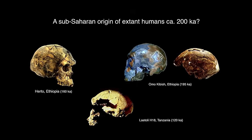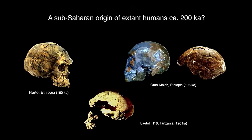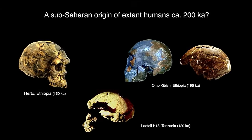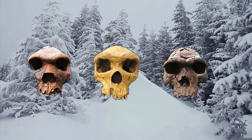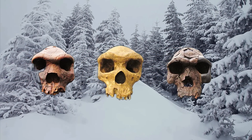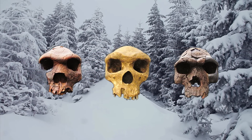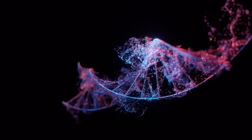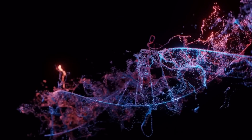Multiple human lineages coexisted during the late middle and late Pleistocene, producing a diverse biogeographic environment for human evolution. These paleo-environments were diverse, ranging from the Gobi Desert to tropical rainforests, from coastal plains to the Tibetan Plateau, and from the steppes of Europe to the savannahs of East Africa and the deserts of the Middle East. Evidence points to a common ancestor or lineage shared by Neanderthals, Denisovans, and modern humans.